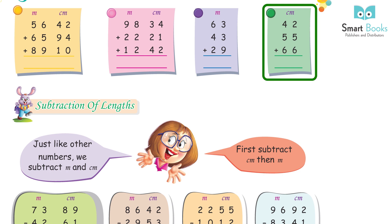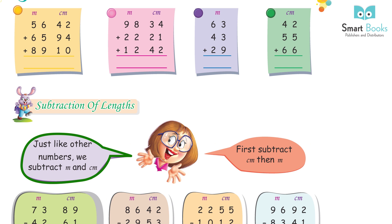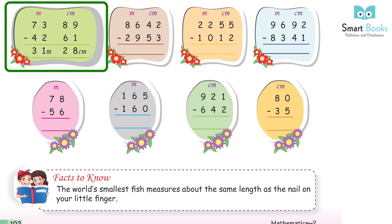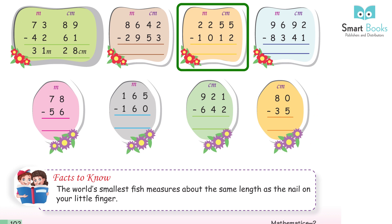42 cm + 55 cm + 66 cm = 163 cm. Subtraction of length: Just like other numbers, we subtract meter and centimeter. First subtract centimeters, then meters. 73 m 89 cm − 42 m 61 cm = 31 m 28 cm.